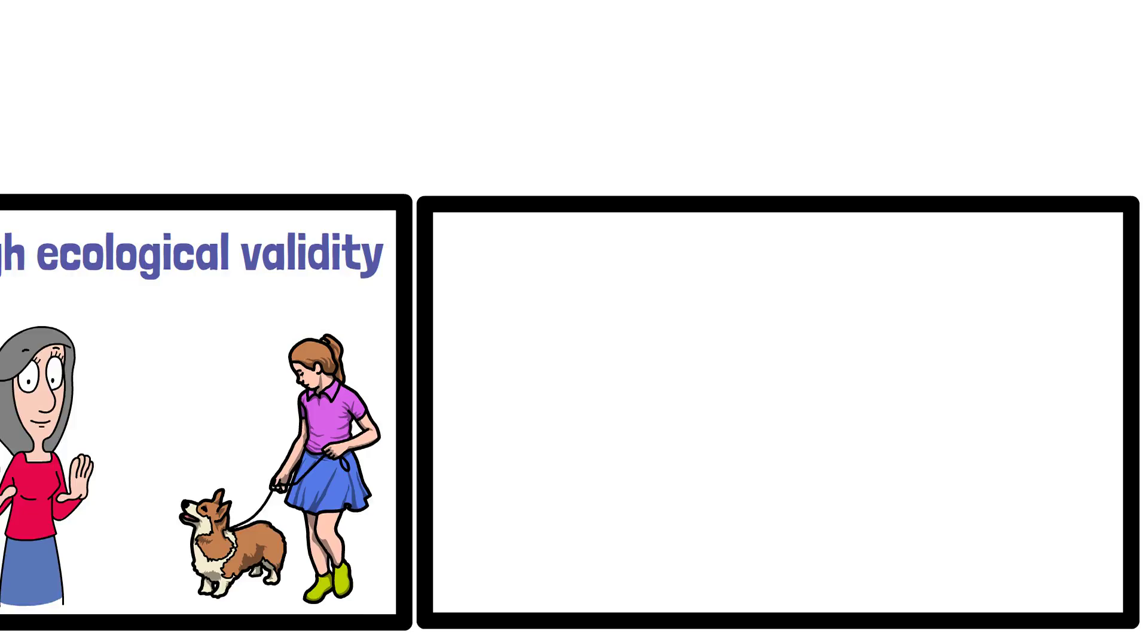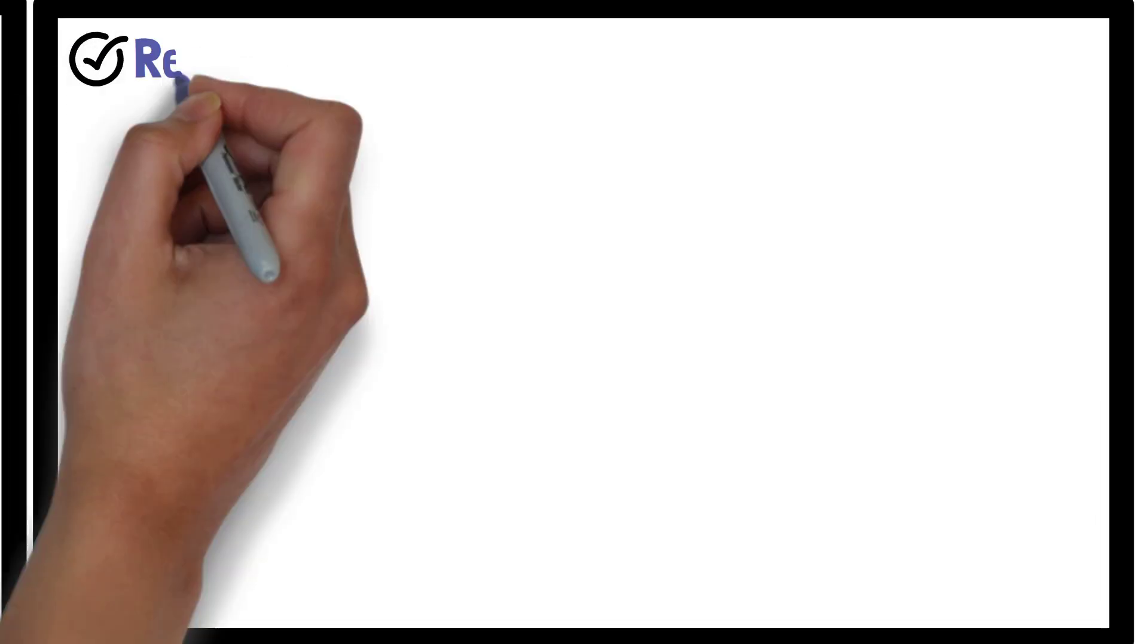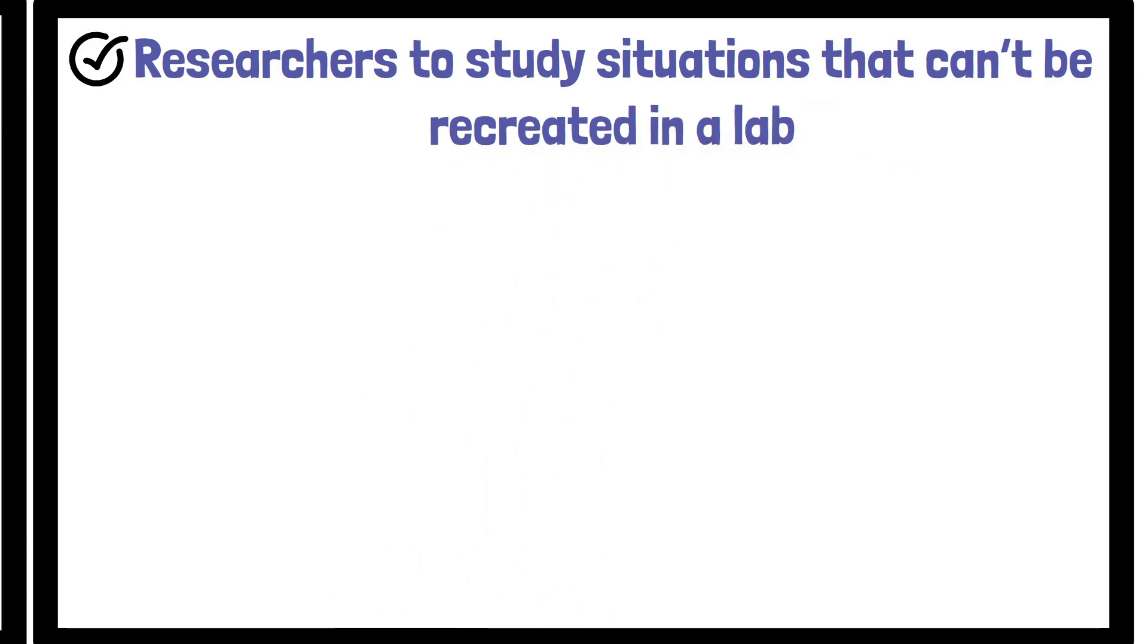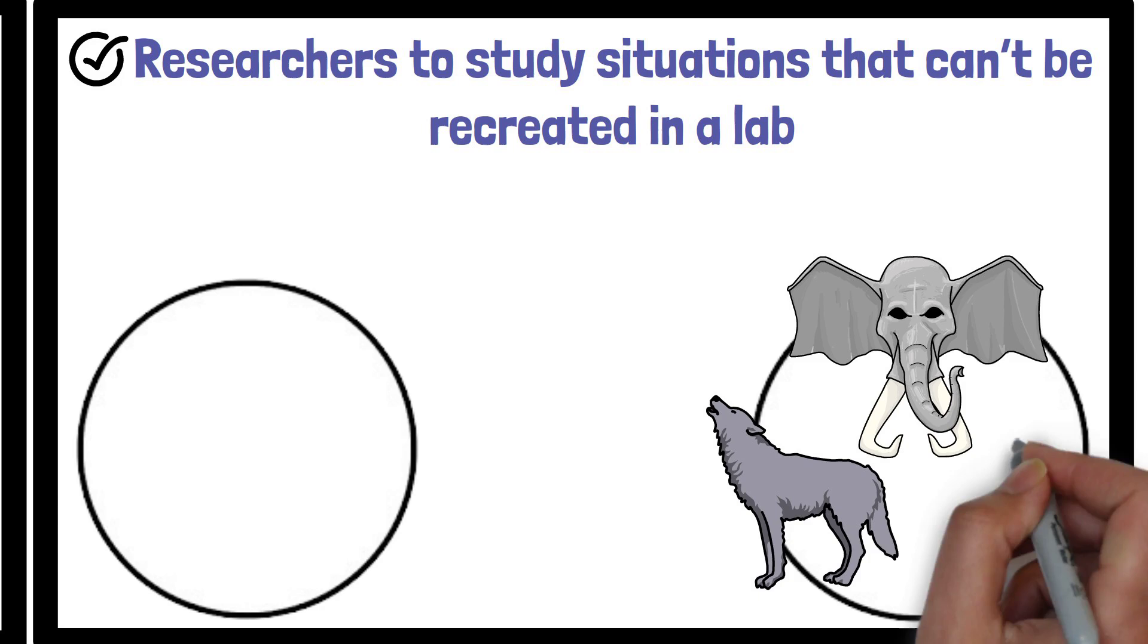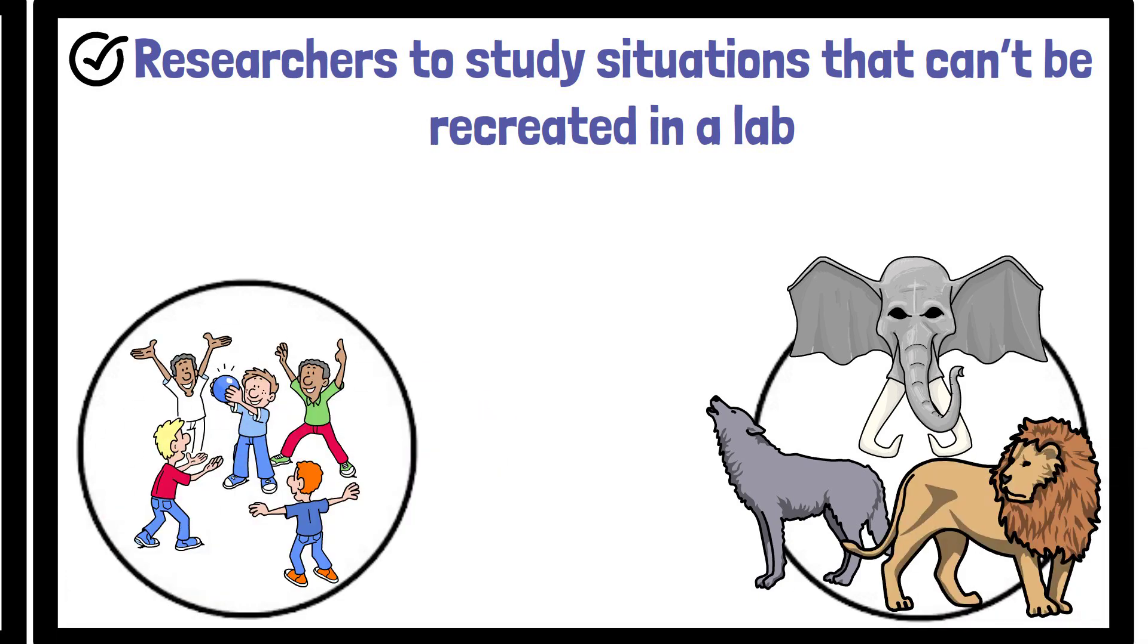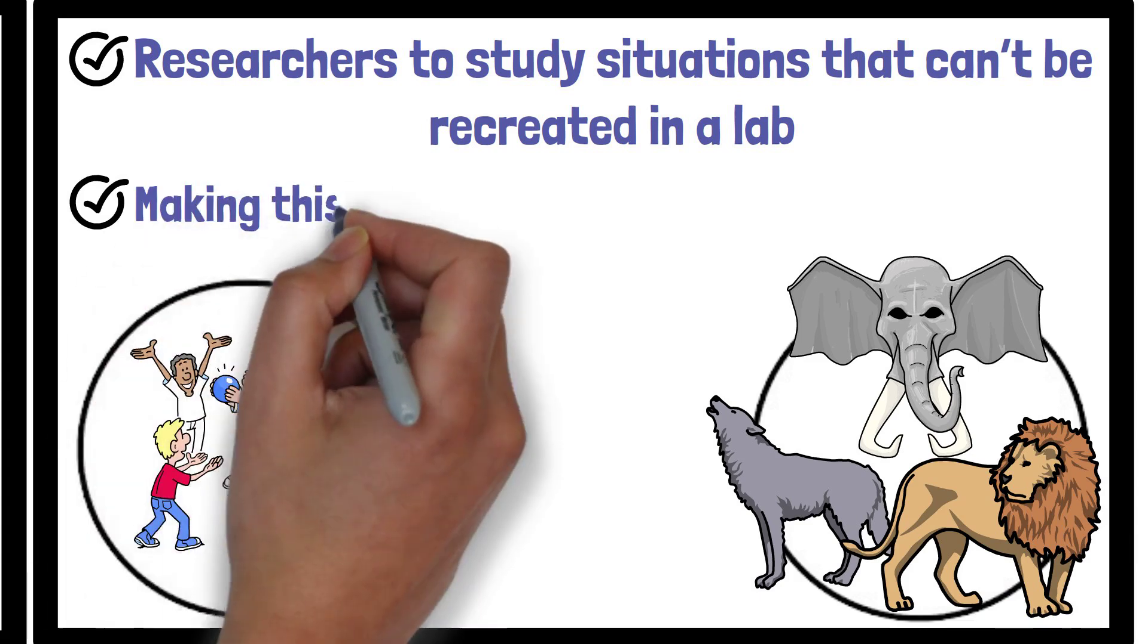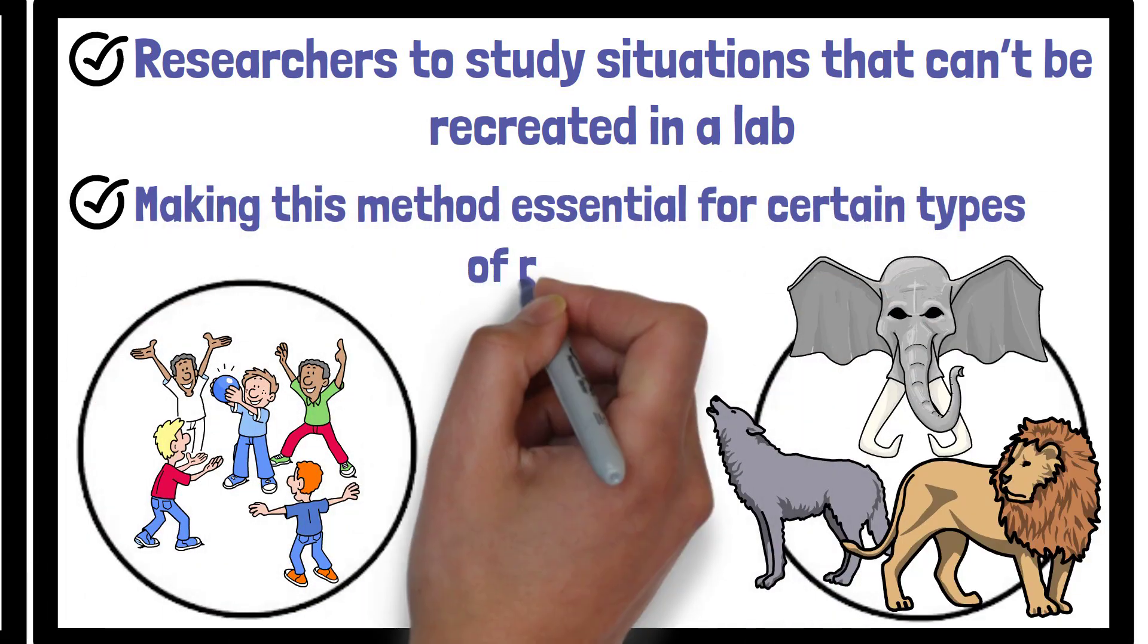Another strength is that naturalistic observation allows researchers to study situations that can't be recreated in a lab. Some behaviours or events, such as animal interactions in the wild or spontaneous social interactions, can only be observed as they naturally occur, making this method essential for certain types of research.